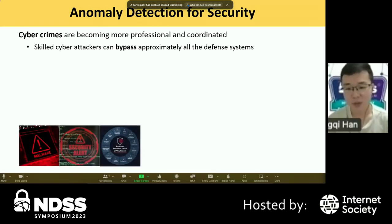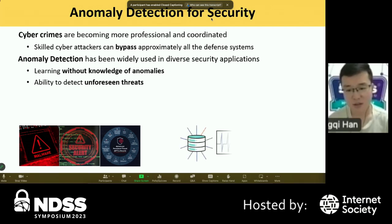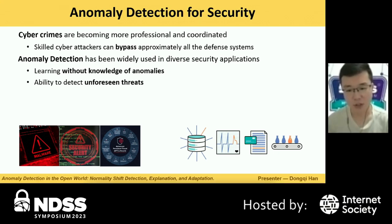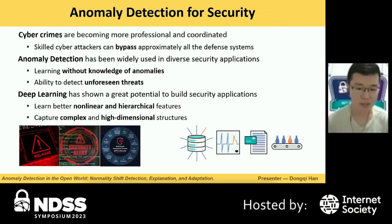Nowadays, cybercrimes are becoming more professional and coordinated. Earlier firewalls, web gateways, and intrusion prevention tools are no longer enough to be secure, as skilled attackers can bypass approximately all these systems. In this context, anomaly detection has been used in many security domains for the great promise of learning without labeled anomalies and detecting emerging threats. With the emergence of deep learning, it has shown great potential to build security applications, given its ability to learn nonlinear and complex features from massive data.